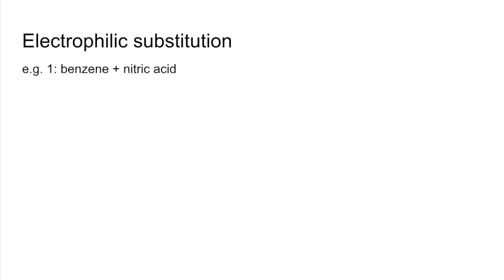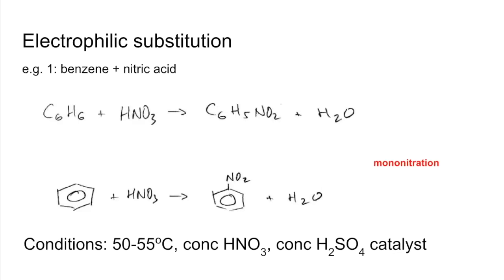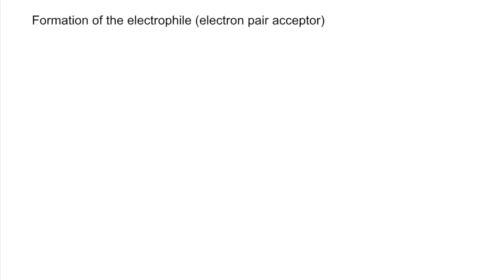Moving on to electrophilic substitution. The first example is benzene with nitric acid. One of the hydrogens on the benzene ring is replaced by the nitro group, giving nitrobenzene — this is mononitration. Conditions: 50–55 °C, because going above that risks polynitration where more than one hydrogen is substituted with a nitro group, and those products can be explosive. Concentrated nitric acid is required along with a concentrated sulfuric acid catalyst. The first part of the mechanism is formation of the electrophile, the electron pair acceptor.